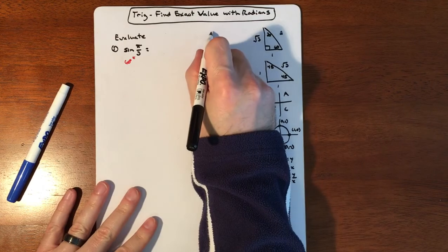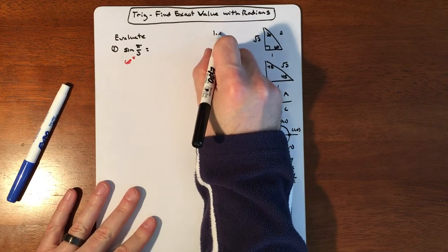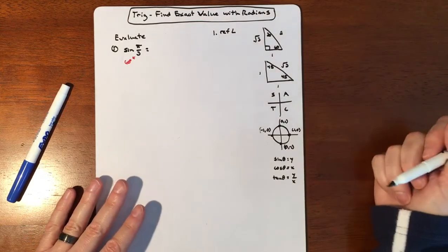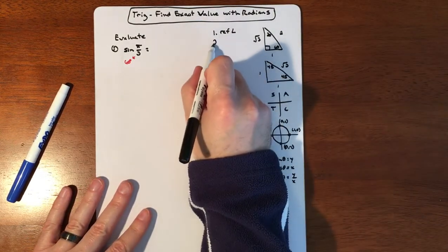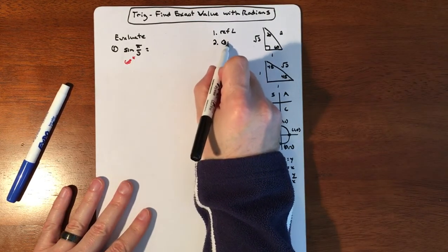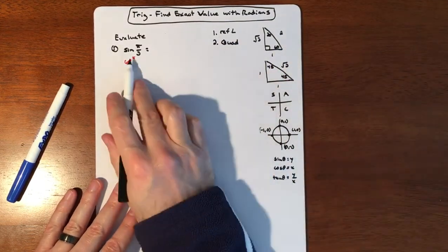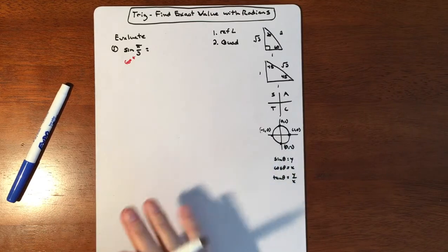And there's two pieces of information that I need. Number one, I need to know my reference angle. If I know my reference angle, I know what triangle to pull from. And then number two, I need to know my quadrant. My quadrant's going to tell me whether it's positive or negative. So right away, it tells me a reference angle. I don't have to do any work, which is great.